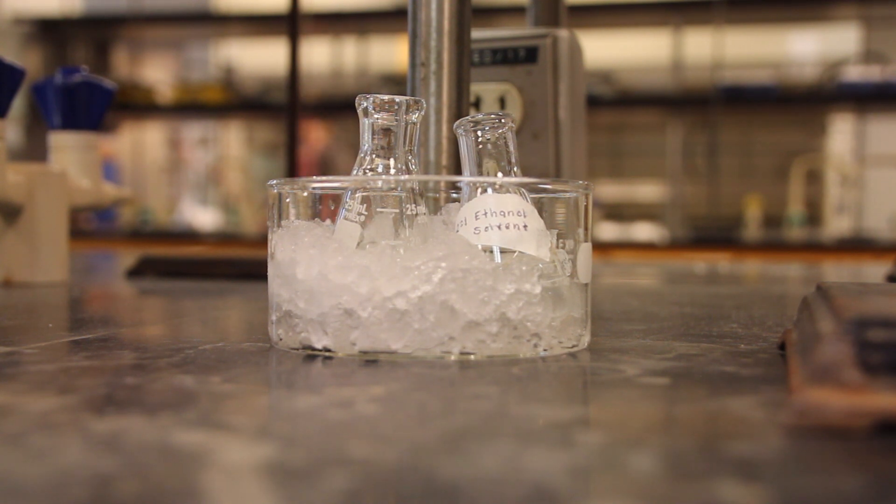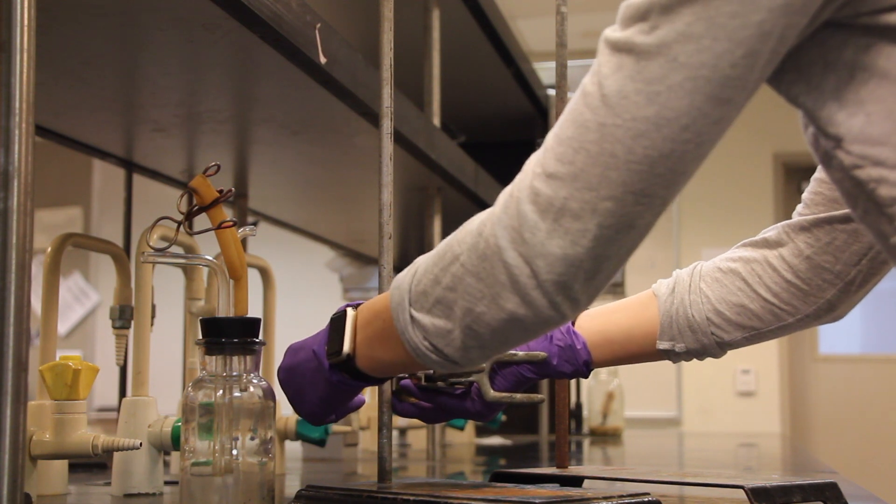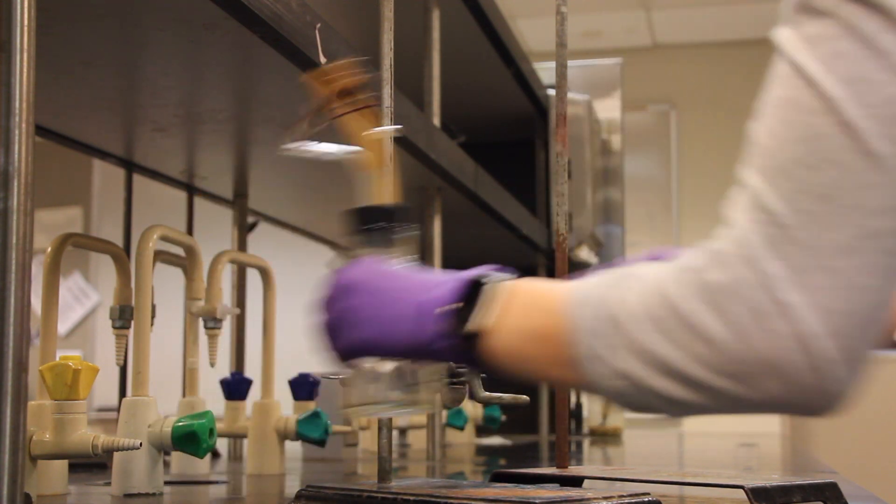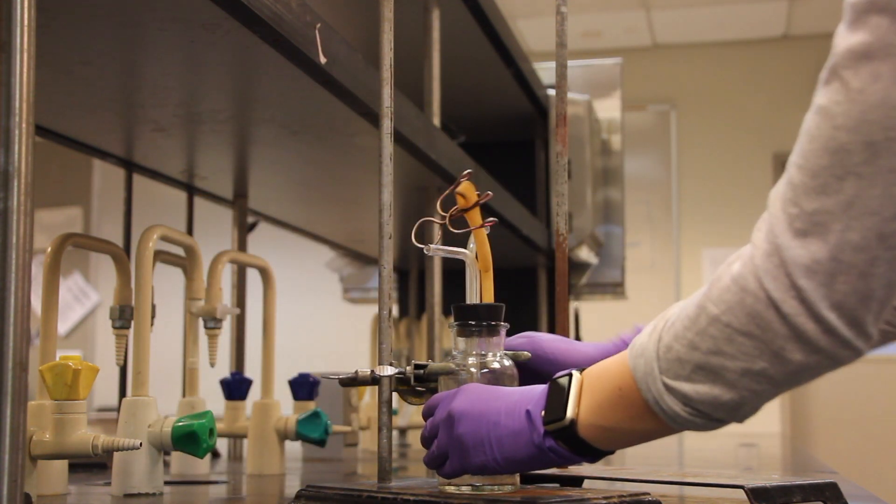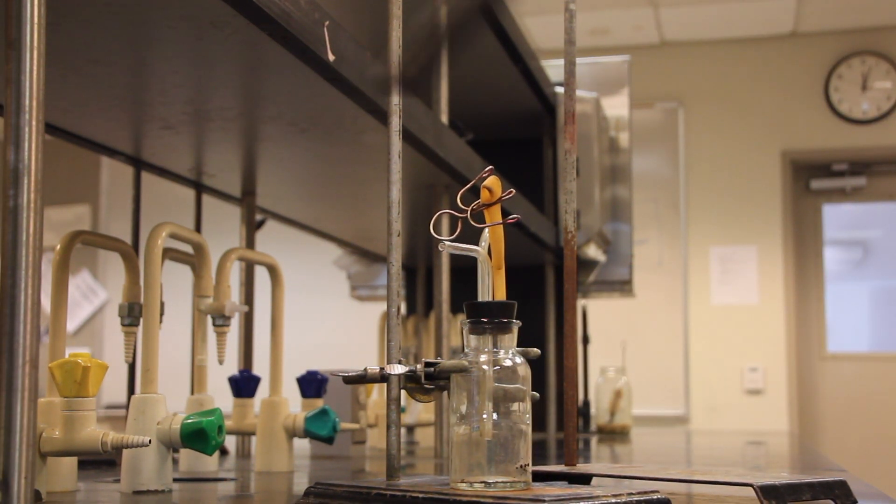We are going to be using suction filtration to isolate the solid product. To begin setting up our vacuum filtration, we will clamp the safety flask in place. Next, we will connect the thick-walled vacuum tubing to the safety flask.